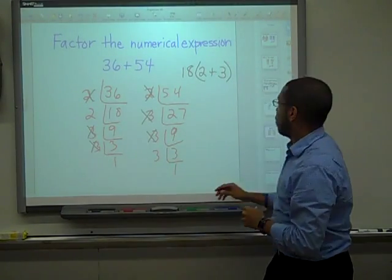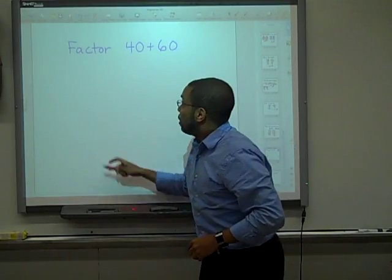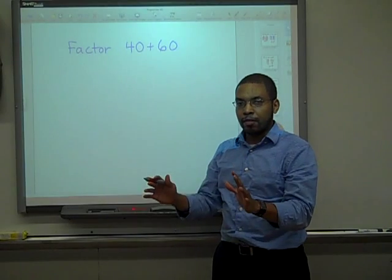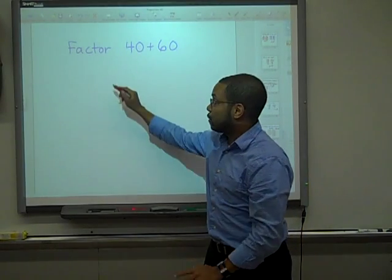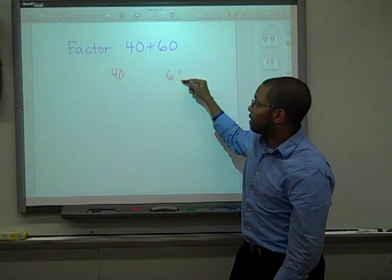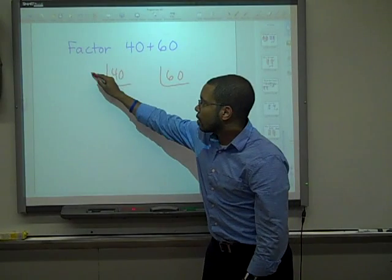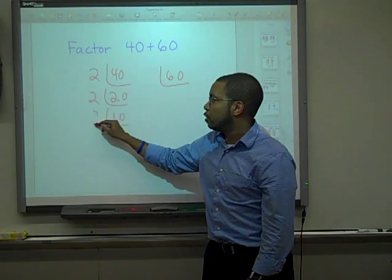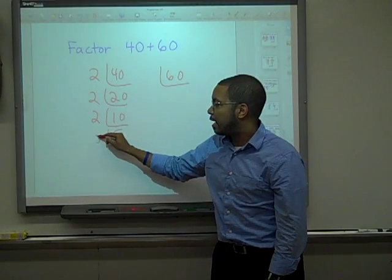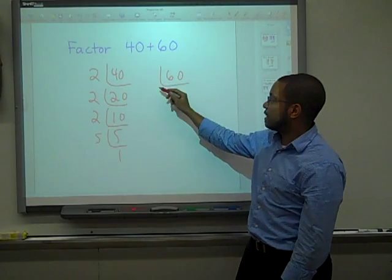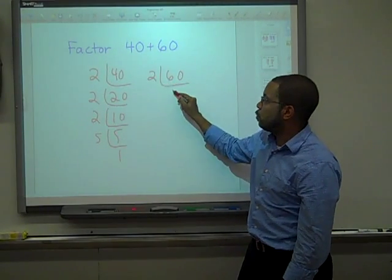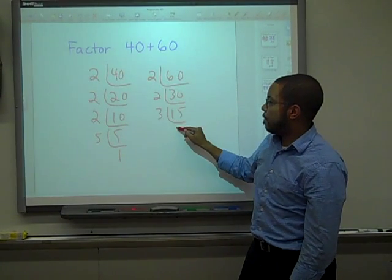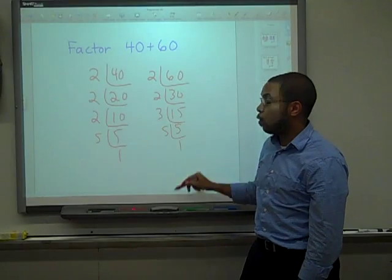Let us do one more. We're going to factor out 40 and 60. The first step is to always find the greatest common factor first. So let's prime factor out 40 and 60. For 40 I get: 2, 20, 2, 10, 2, 5, 5, 1. And 60 is: 2, 30, 2, 15, 3, 5, 5, 1.